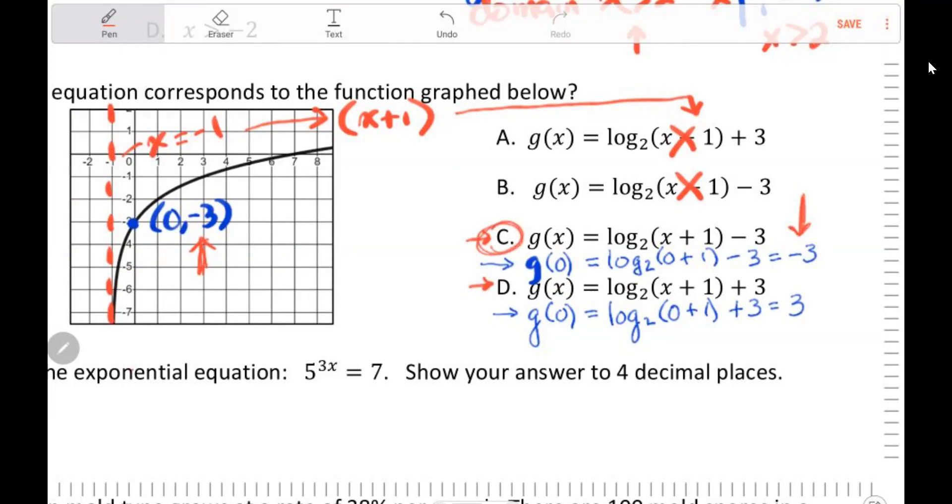So I had to do two things there. One, find the asymptote. That's one, find the asymptote. And then I had to, two, find the y-intercept.